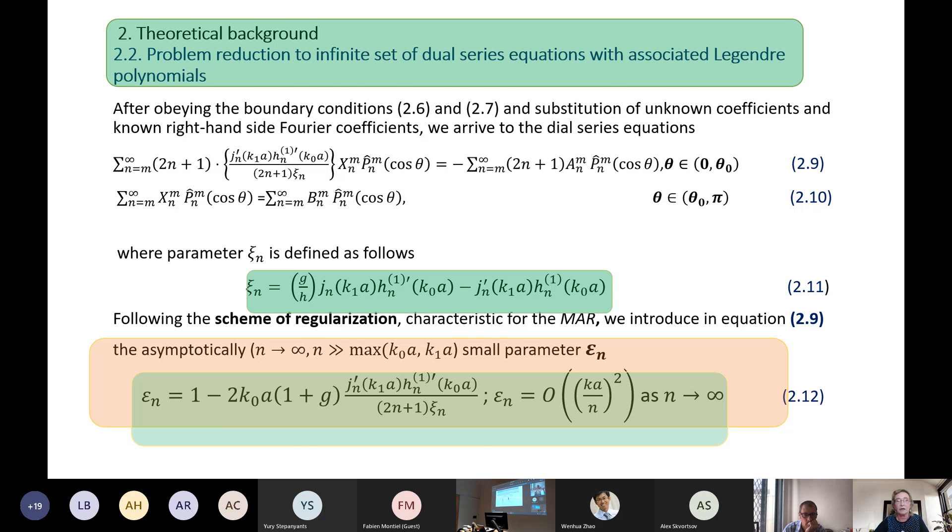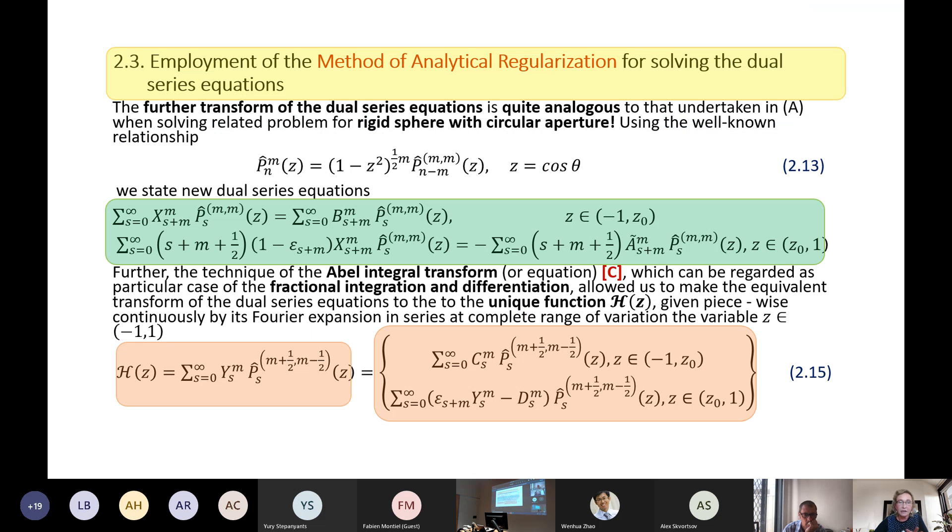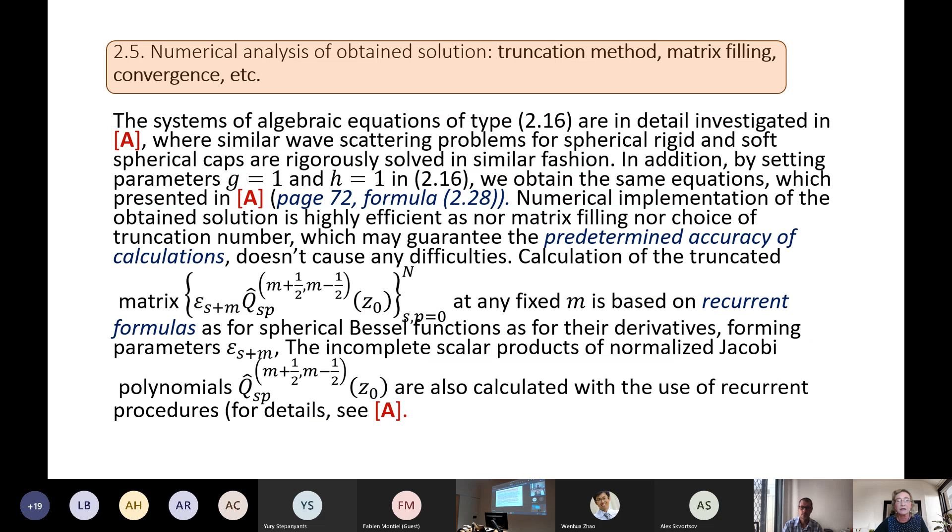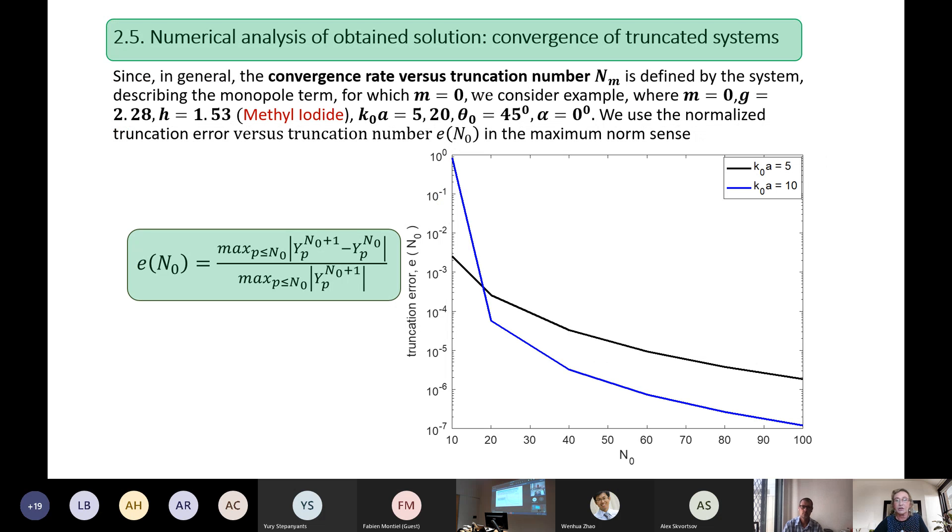Using technique of method, we introduce asymptotically small parameter, and then following all steps, we obtain a finite system of equations to solve, where right-hand side is derived from known functions incident field, and here matrix elements epsilon times q are calculated using recurrence relations. So no integration, nothing. The system of second kind has fast convergence. Here truncation error is presented for the structure for the sphere with methyl iodide inside, and you see that solution to the system has fast convergence with increasing truncation number.